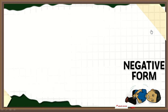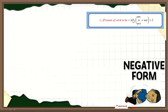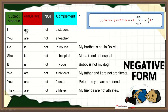Negative form. The structure is: subject plus am, is, or are, plus not, plus complement. Look at the examples: I am not a student. You are not a teacher. He is not in Bolivia. She is not at hospital. It is not my dog. We are not architects. You are not friends. They are not athletes.